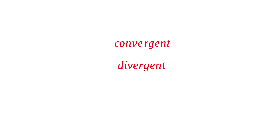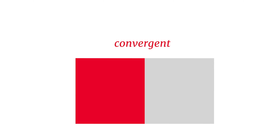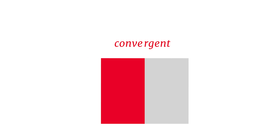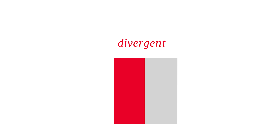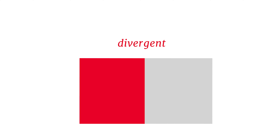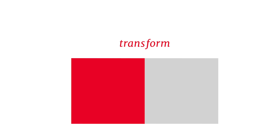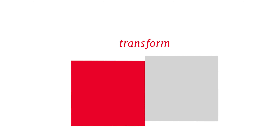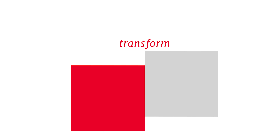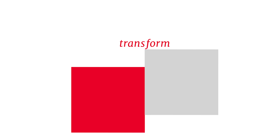There are three basic types of plate boundaries: convergent, divergent, and transform. Convergent boundaries are where two plates are moving towards each other — they're converging or colliding. Divergent boundaries are where two plates are moving away from each other — they're rifting and diverging. Transform boundaries are where two plates don't necessarily move towards or away from each other, but instead slide past each other laterally.